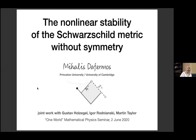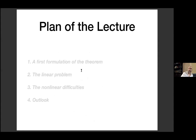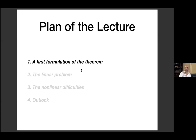Let me tell you the plan of this lecture. I'll first give a formulation of the main theorem, introducing the Schwarzschild metric. This is a nonlinear stability result, and nonlinear stability analysis naturally partitions itself into the linear analysis and the actual nonlinear difficulties. I'll talk about those in sequence, and finally give a future outlook about problems in this field.